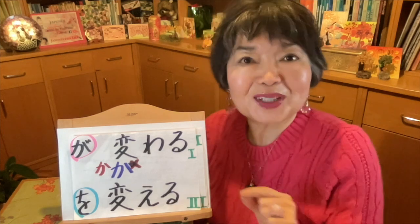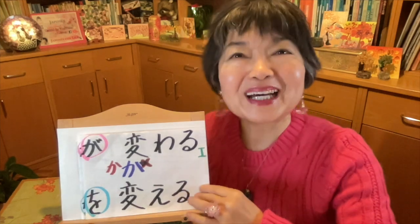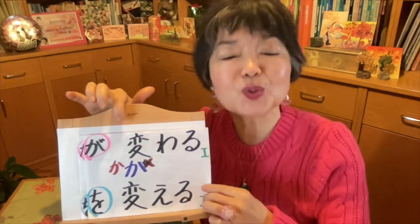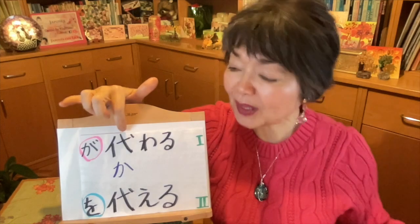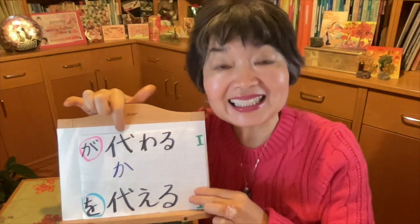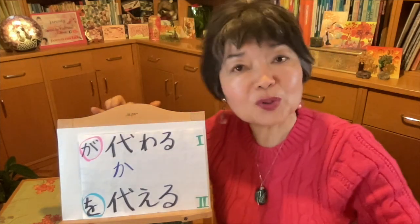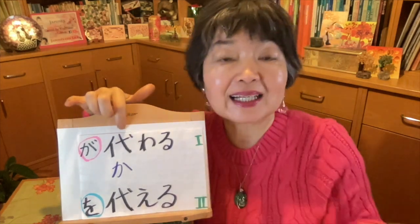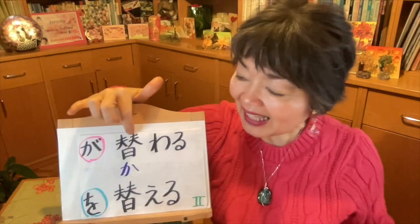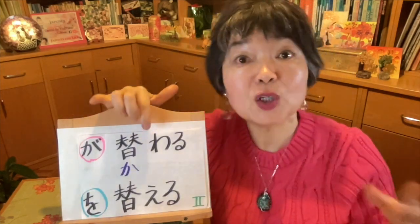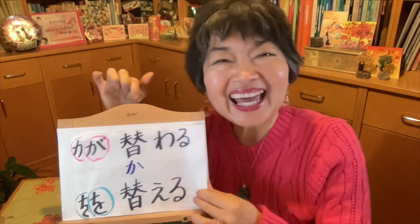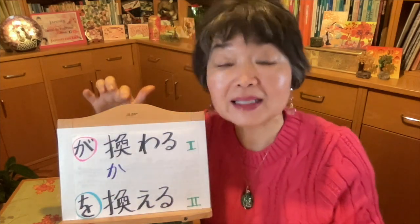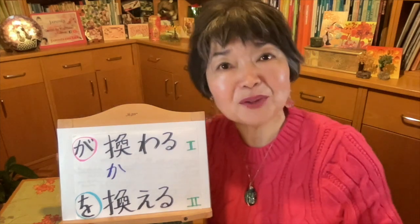Before I quit, a very brief review about these four kanjis: 変わる means to change conditions or state. The second kanji 代わる means to take somebody's place or to substitute. 換わる means to change to something new. And 替わる means to change but the value must be the same.